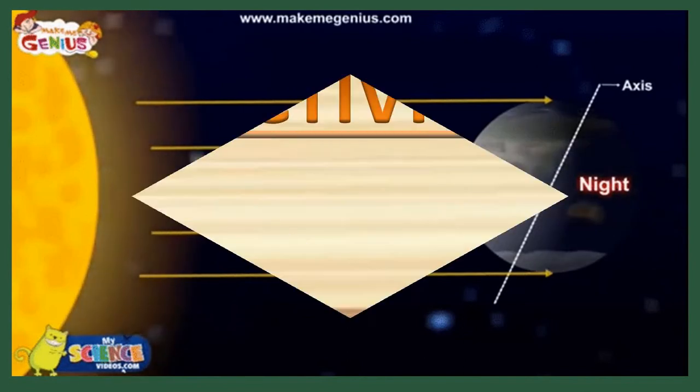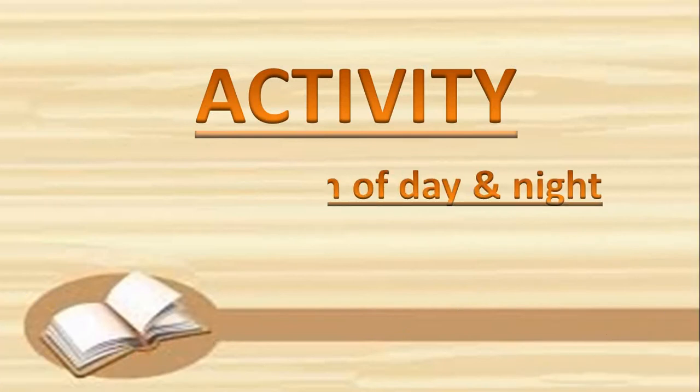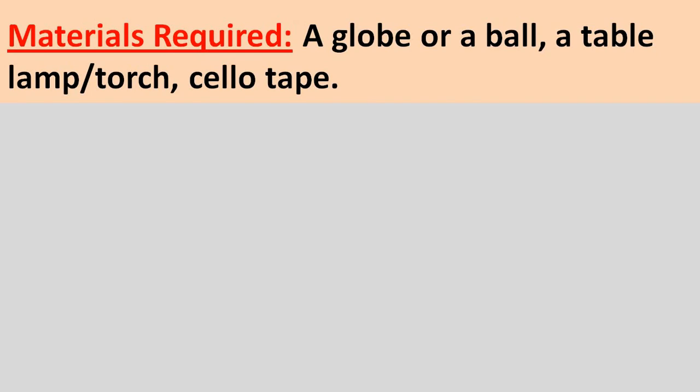Let us understand this with an activity. For doing this activity, you need a globe or a ball, a table lamp or torch, and cello tape. You can also use one small sticker of a child and stick it on the globe or a ball with cello tape.